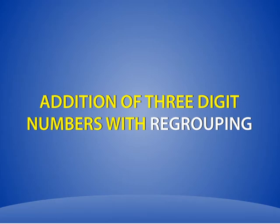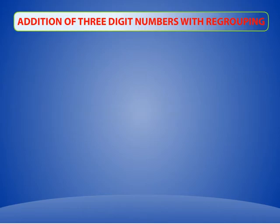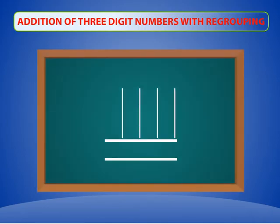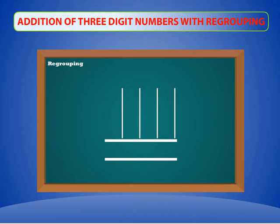Addition of 3-digit numbers with regrouping. Let's learn addition of 3-digit numbers with regrouping. This is the ones place. This is the tens place. And this is the hundreds place.